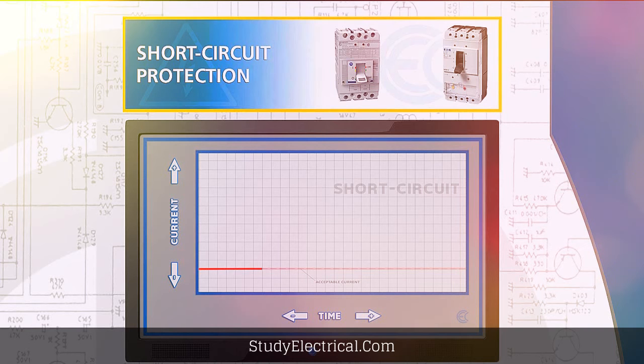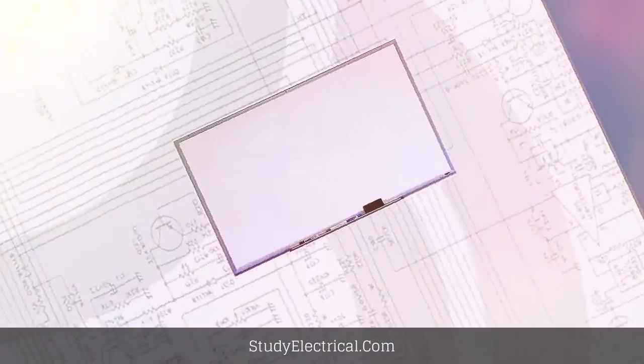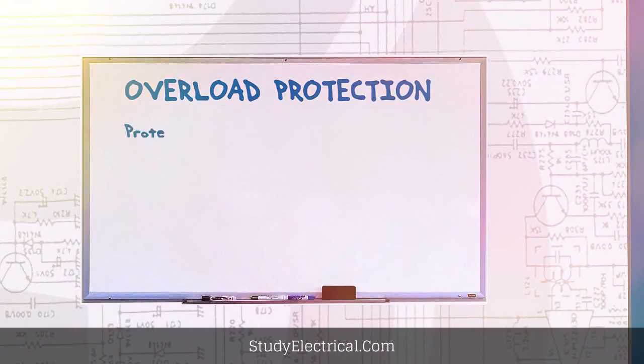As soon as an overcurrent is detected, the device trips and breaks the circuit. To sum up, overload protection breaks a circuit only after a prolonged period of overcurrent.